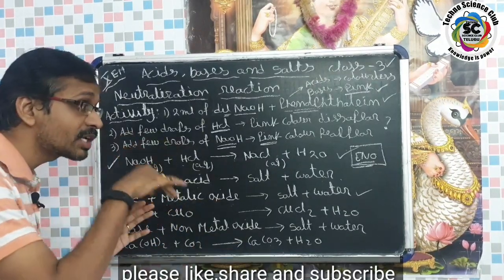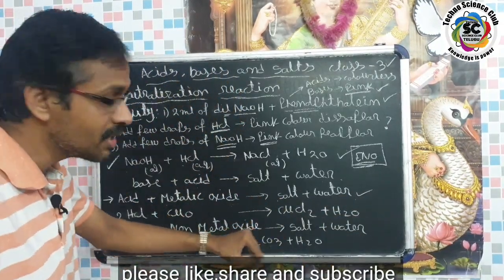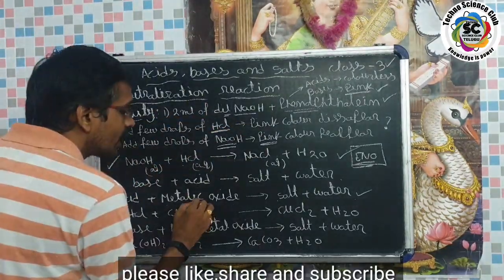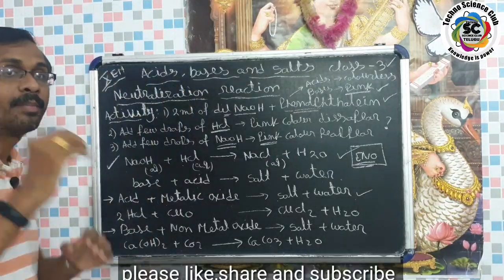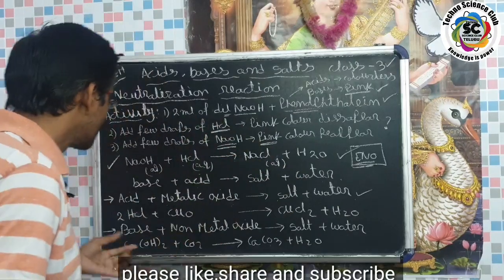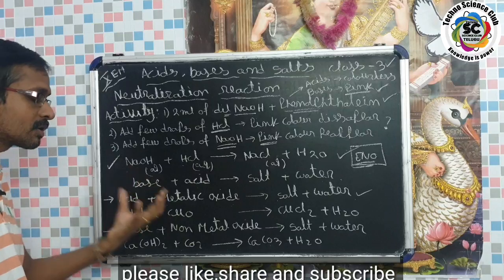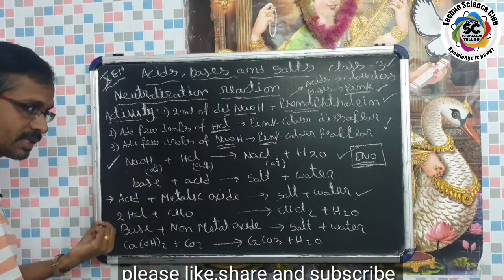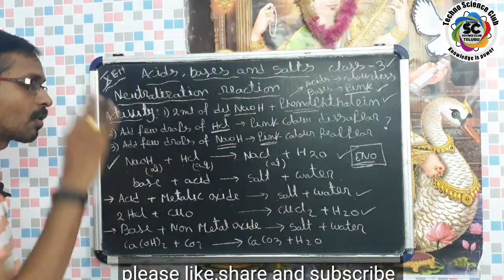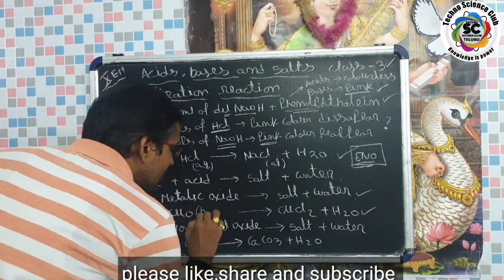Metallic oxides have a basic nature — all metallic oxides have basic nature. An acid reacts with a metallic oxide to give a salt and water, which is a neutralization reaction. For example: 2HCl + CuO (copper oxide) → CuCl₂ (copper chloride, a salt) + H₂O. Copper oxide, the metallic oxide, has a basic nature.